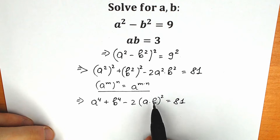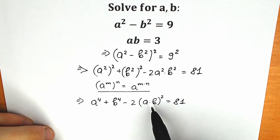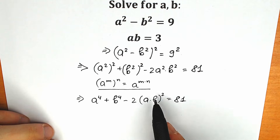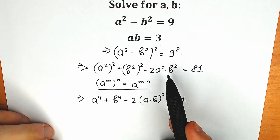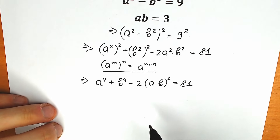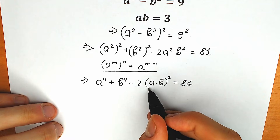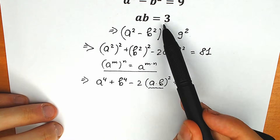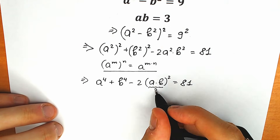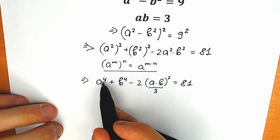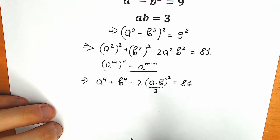According to the power rule, we can write it in that way. I hope you understand why we can write that product like that. Right now, from the second equation we know ab equals 3. So from this expression, we can easily find a to the fourth plus b to the fourth.